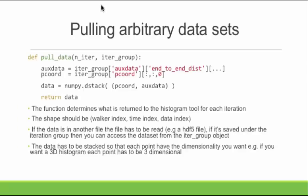The Python function works as follows: during every iteration, if you give the Construct Dataset option this function, it will load the function and in every iteration it will run this function before doing any histogramming. The function takes in an integer giving the iteration number, and an `iter_group` Python object from the H5Py library. The iter_group can be indexed for the data you have in the H5 file — think of it as iteration one in your H5Py file.